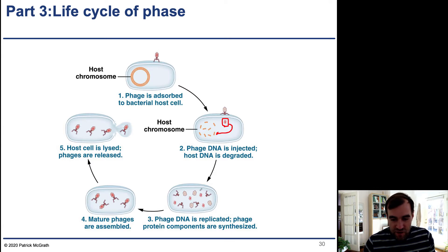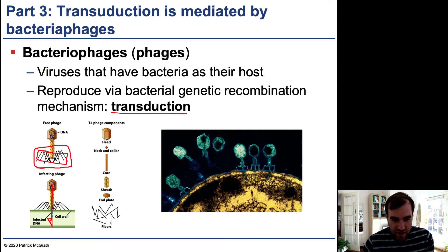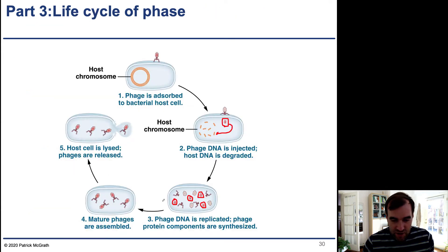Once the host cell has been taken over, the virus uses its DNA instructions to copy the genome. A large number of viral genome copies are produced, and then the parts of the viral particle — such as the head, core, and fibers — are created separately, which then allows the mature phages to assemble.